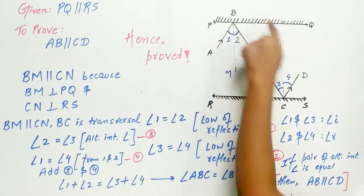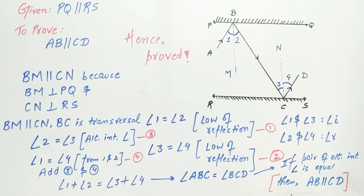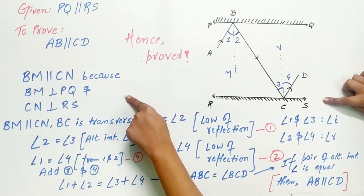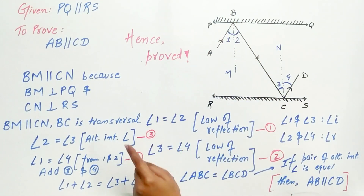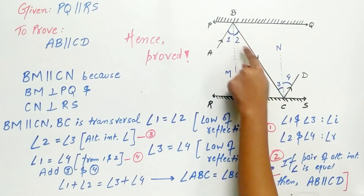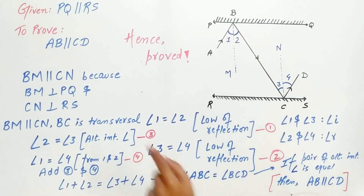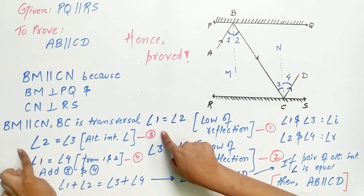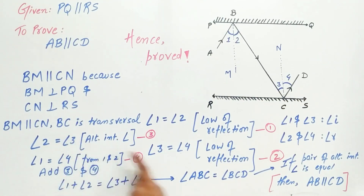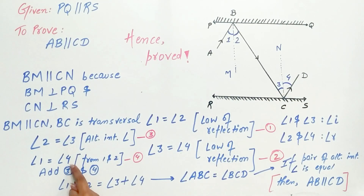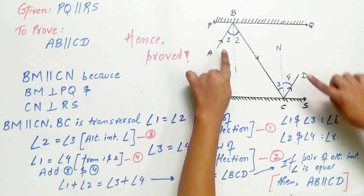BM is parallel to CN because they are perpendicular to PQ and RS respectively, hence they are parallel to each other. BC is a transversal. Therefore, angle 2 is equal to angle 3 because of alternate interior angles. Since angle 2 equals angle 1, we can write angle 1 in place of angle 2. Similarly, since angle 3 equals angle 4, substitute angle 4 in place of angle 3, and thus angle 1 is equal to angle 4.